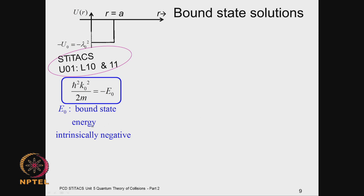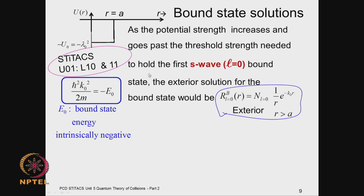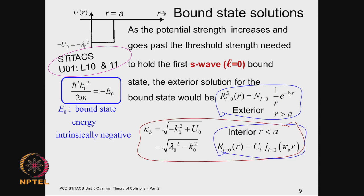The bound state energy is intrinsically negative, so ℏ²k₀²/2m = −E₀. We consider first the l = 0 solutions — S-wave scattering — where the exterior solution decays exponentially outside, and inside you have the Bessel functions with argument κr. Here κ is determined by k₀, which is the bound state energy, and the potential depth. We put a subscript b on κ to remind us that this is the bound state solution.